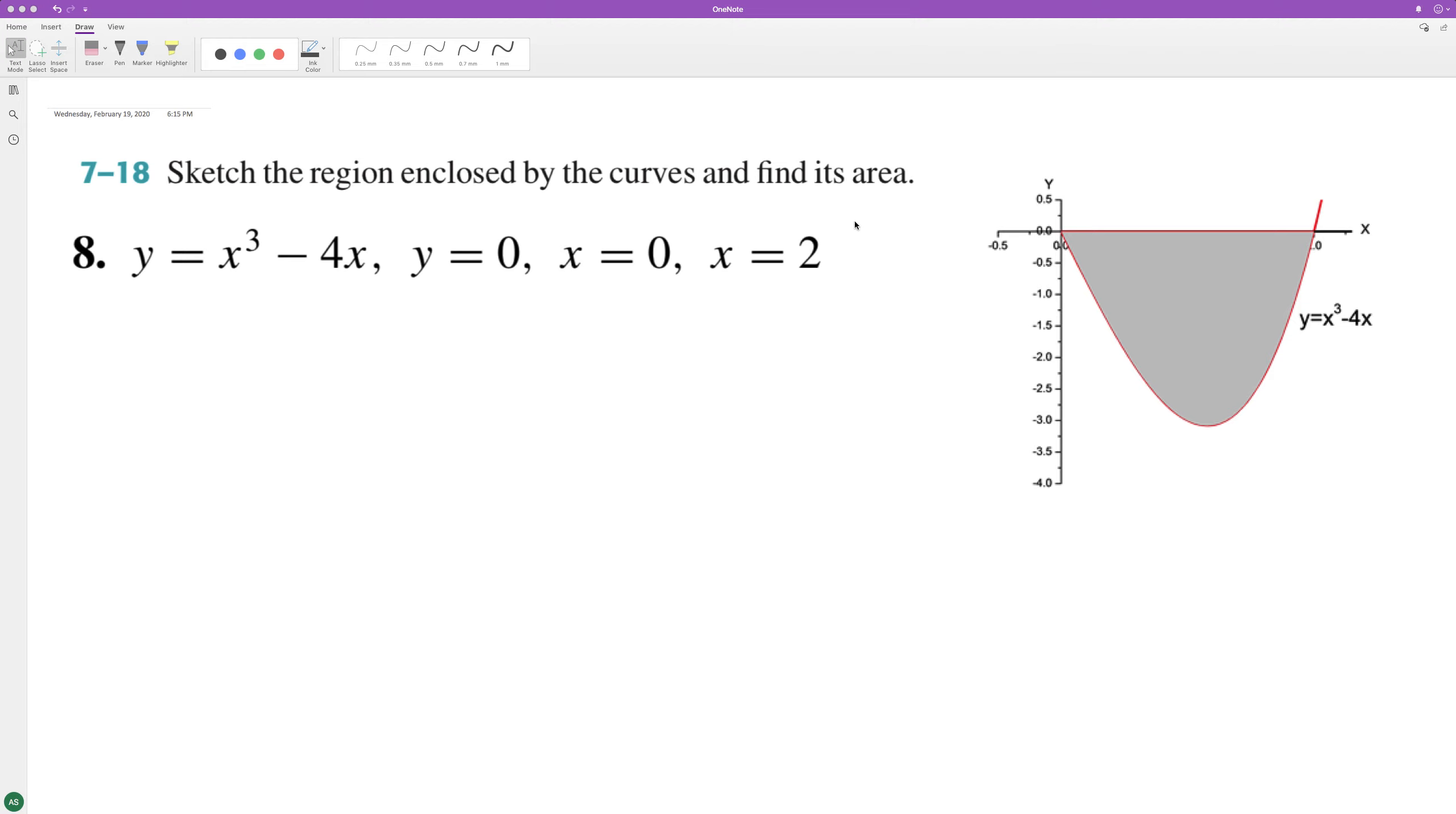We want to find the area between y equals 0 and x cubed minus 4x. So that's all that shaded area here in the illustration.